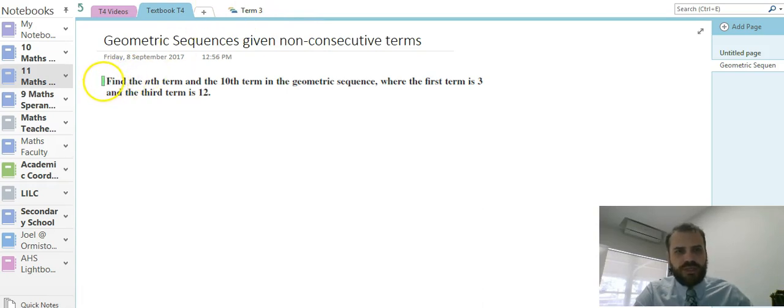So if you look at the question here, it says find the nth term and the 10th term in the geometric sequence where the first term is 3 and the third term is 12.